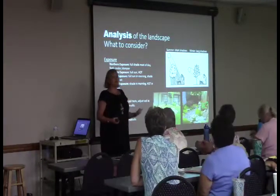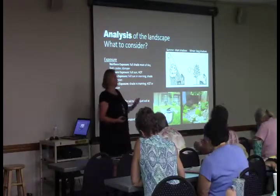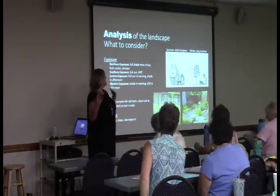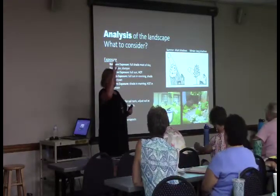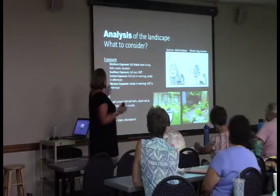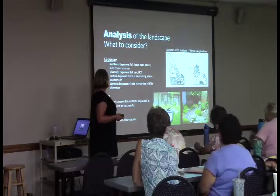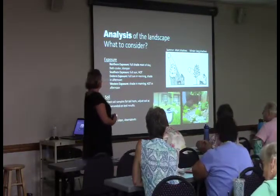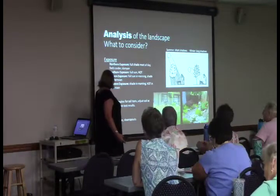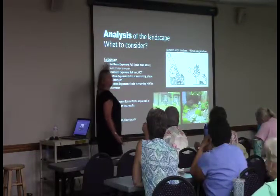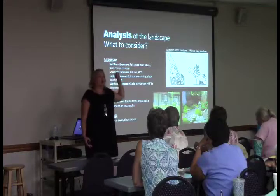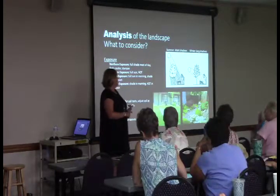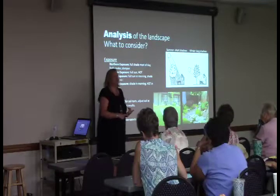Of course you want to think about exposure — when it comes to plants, we need to know where's the sun and where's the shade, but not just in general. Where is the sun and shade in the winter versus the summer? Because the angle of the sun changes and therefore your shadows are longer in the winter. Those are things we need to take into consideration. The soil — it's great to do a soil test so you know what you're working with and what kind of amendments you need to add. And drainage — if I were to rank these, I would put drainage first. Drainage is huge and it's often overlooked.